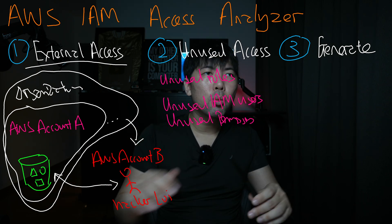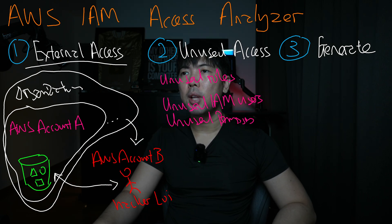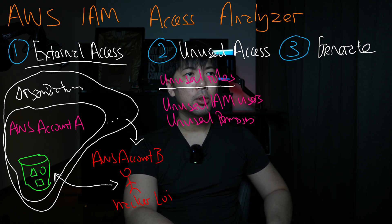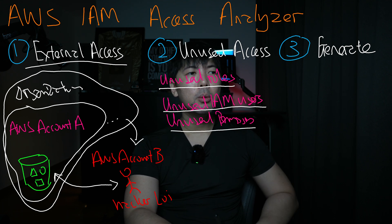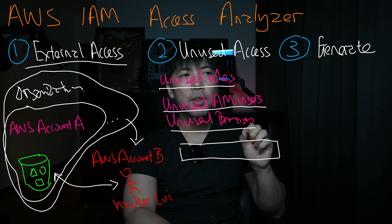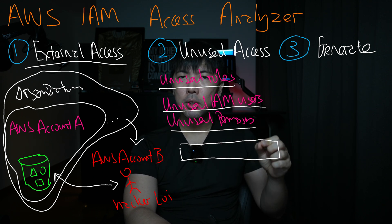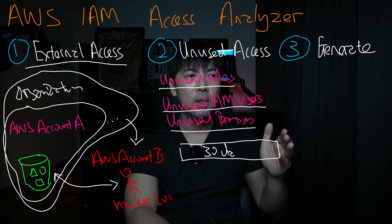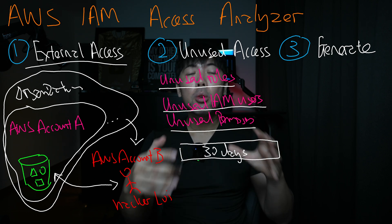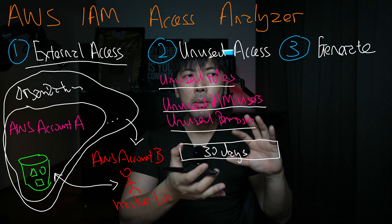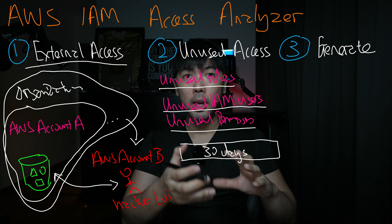Now the second part is what we call unused accesses. What it means here is that we are looking at roles, IAM users, and permissions. What you do in this case is specify a window — the period of time where the roles, users, or permissions have been unused. Say for example, you're looking at a 30-day period. With that, you can begin cleaning up and tightening permissions within your AWS accounts.